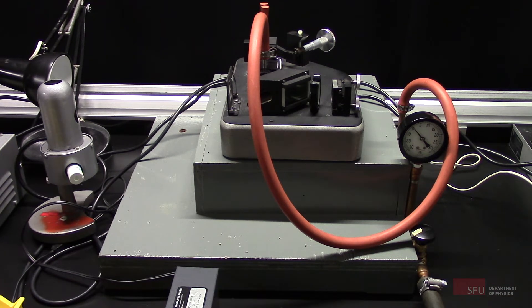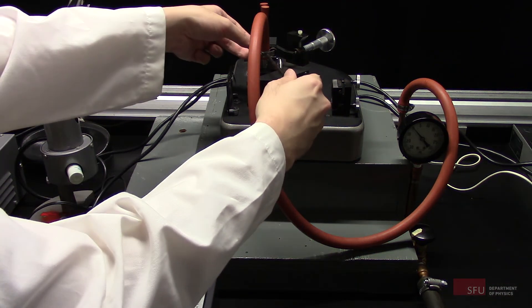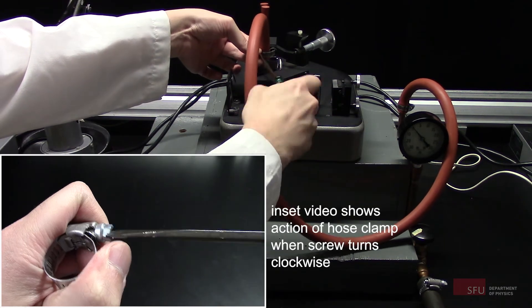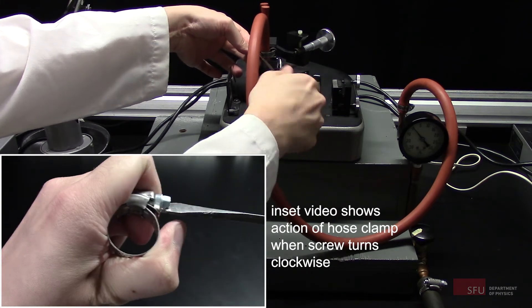After connecting the hoses, you will need to tighten the hose clamps to make sure you have a good seal. Turn clockwise on the screw to tighten.